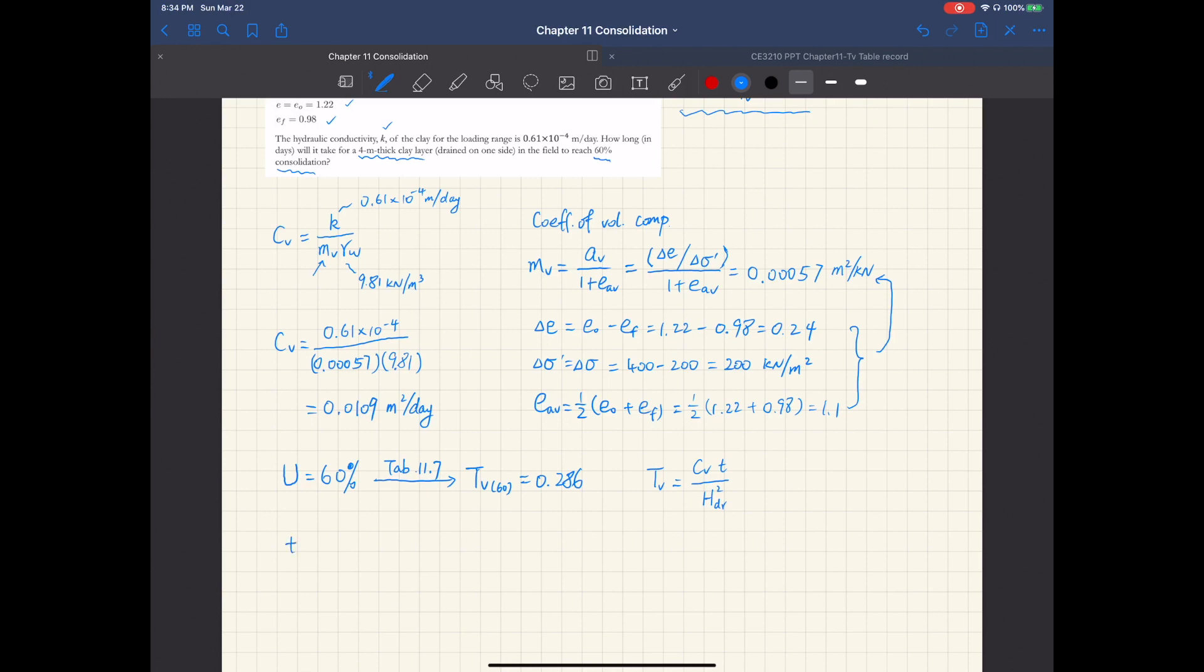It's going to be 0.286 times H sub DR, which in this case is 4 squared, over coefficient of consolidation C sub V, 0.0109.